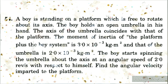The moment of inertia of the platform plus boy system is 3 x 10⁻³ kg·m², and that of the umbrella is 2 x 10⁻³ kg·m². The boy starts spinning the umbrella about the axis at an angular speed of 2 revolutions per second with respect to himself. Find the angular velocity imparted to the platform.